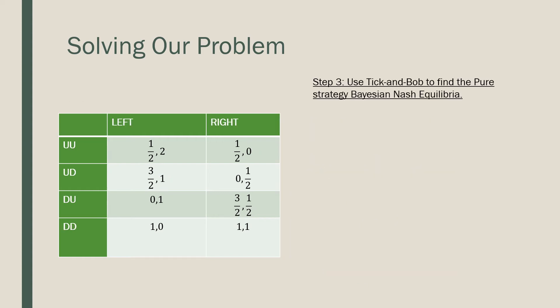So then we're going to use tick and bob to find all pure strategy Nash equilibria. Let's pull out our handy dandy pen. If our column player is choosing left, what would be our row player's best response? In this case, their best response would be to choose UD. That's the best thing here.